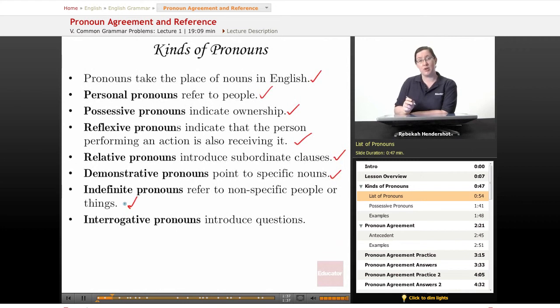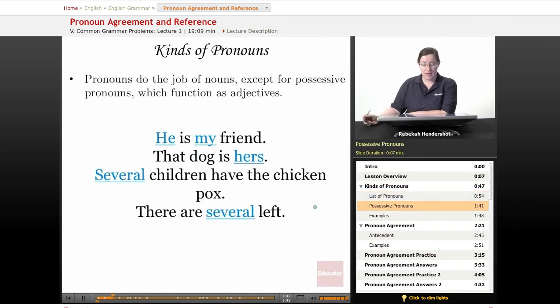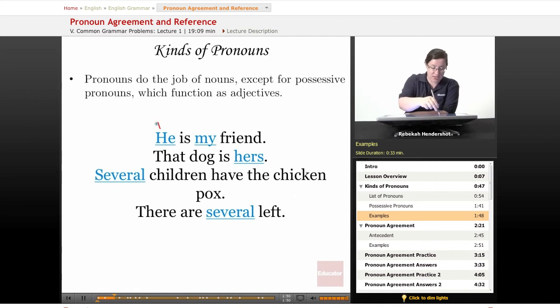Interrogative pronouns introduce questions: who, what, when, where, why. Pronouns do the job of nouns except for possessive pronouns, which function as adjectives. So, 'He is my friend'—he is a personal pronoun, and my is a possessive pronoun. 'That dog is hers'—possessive again.